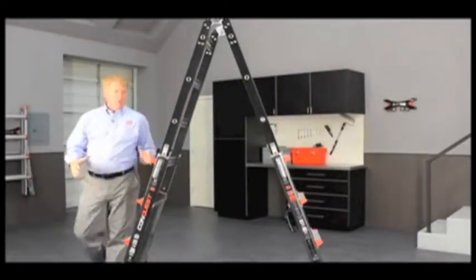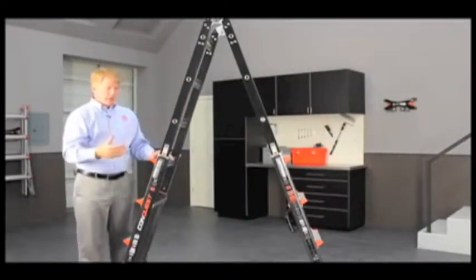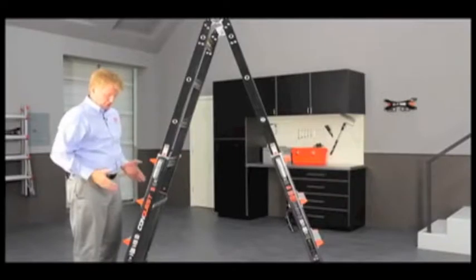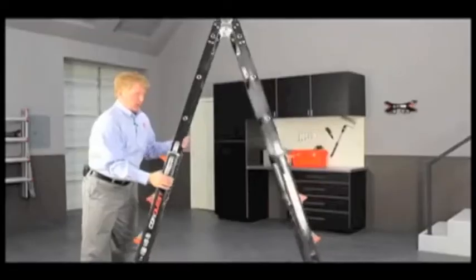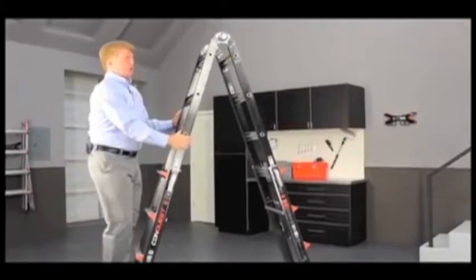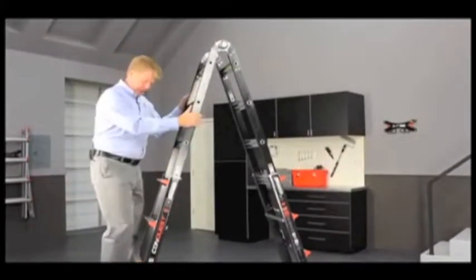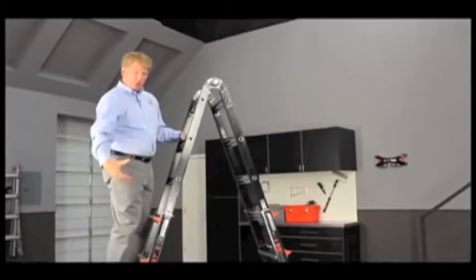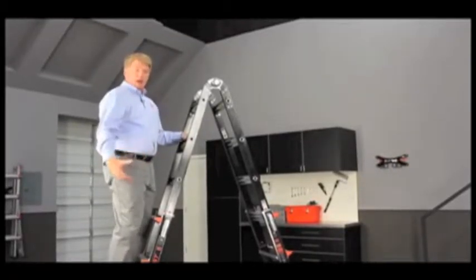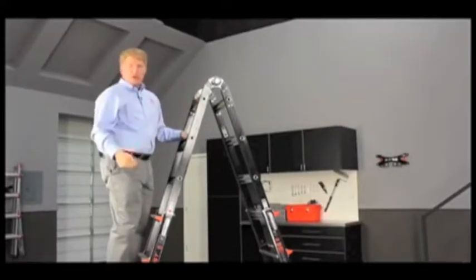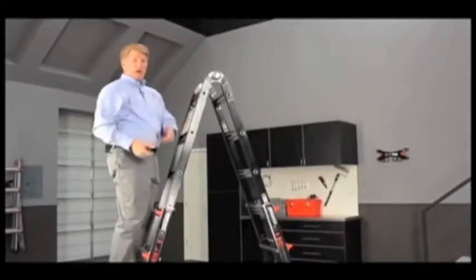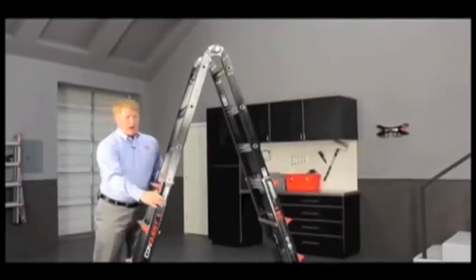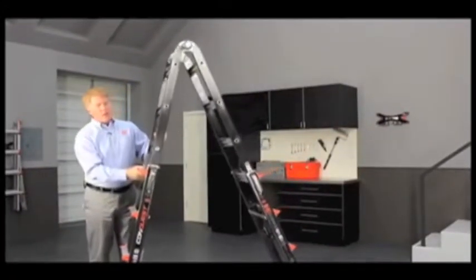Some safety features that I want to talk about while we're in the a-frame position: like any other step ladder, you want to make sure that as you climb it you stay centered between the two side rails. You want to make sure that as you ascend and descend that you always have three points of contact so that you keep a hold of the ladder. And you never want to carry heavy tools or items up the ladder with you. If you need to get heavy items up to the top of your ladder, you need to tie those off on a rope, get to the top of the ladder, and then pull those tools up to you once you're up on the ladder.